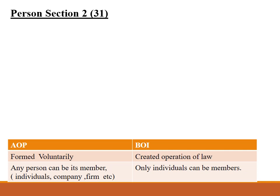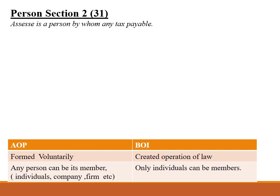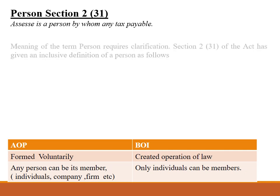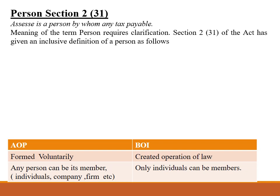Let us discuss the next definition: Person as per Section 2.31. An Assessee is a person by whom any tax is payable, so an Assessee is a person. The term 'person' is not small — it needs clarification. Section 2.31 of the Act has given an inclusive definition of a person.